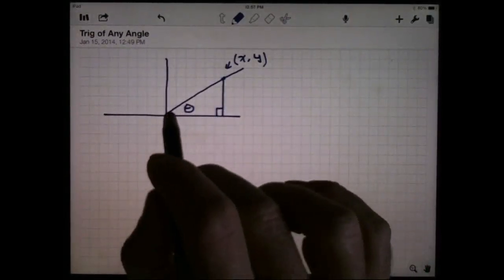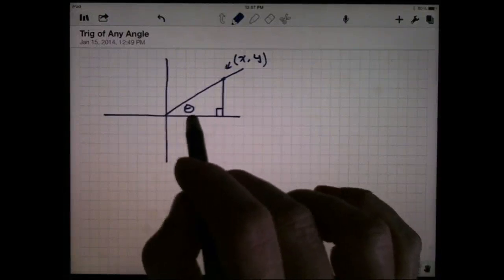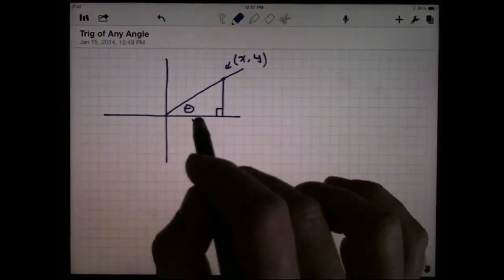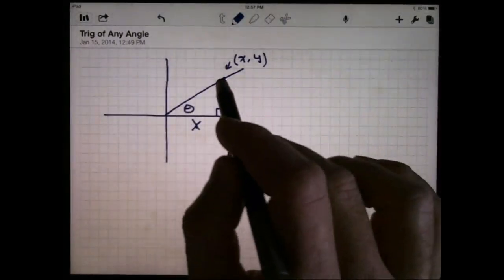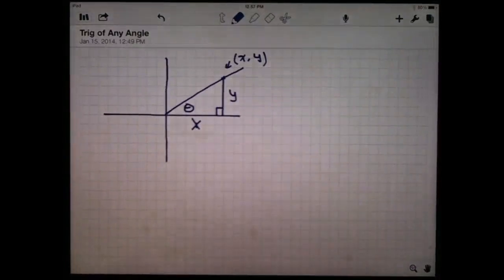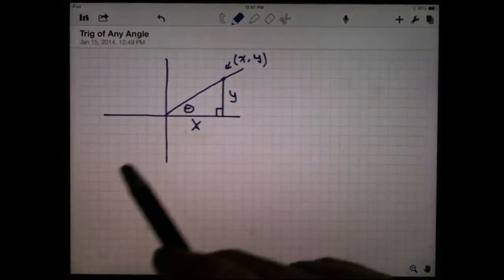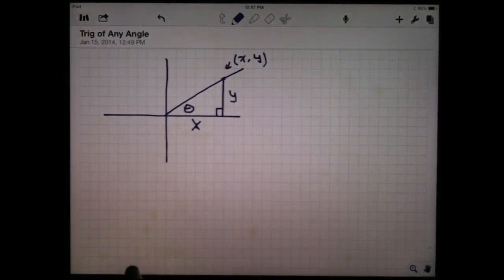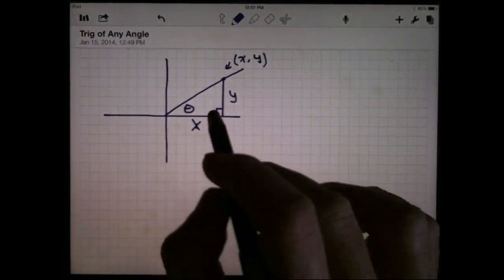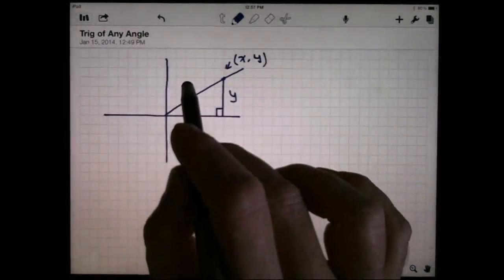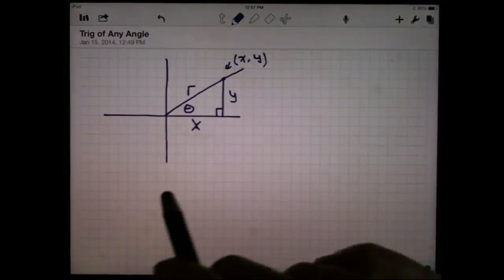The right triangle, where this side right here is the x-coordinate, the length of this side is the x-coordinate of that point. Likewise, the length of this vertical side is the y-coordinate of that point. So you can think of x and y as coordinates, or you can think of them as lengths of edges of a triangle. Well, this triangle has another edge, and we'll call that length r, r for radius essentially.